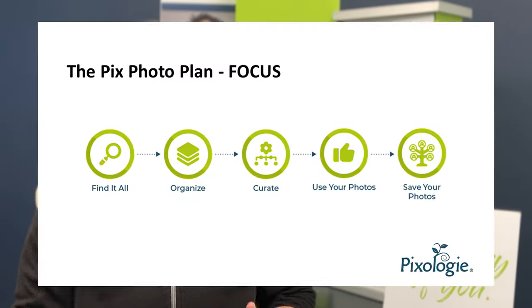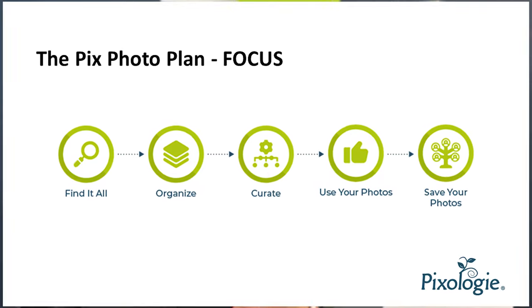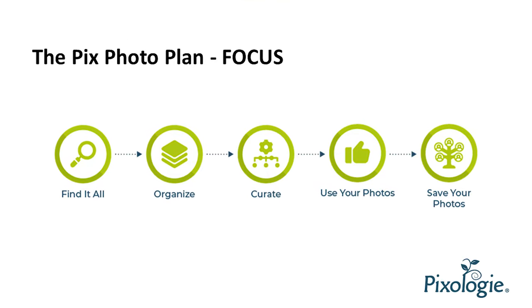The letters actually have meaning, as you can see here. F stands for Find it all. O is for Organize. C is for Curate. U is for Use. And S is for Save — save for future generations. That's why there's a family tree in the icon.